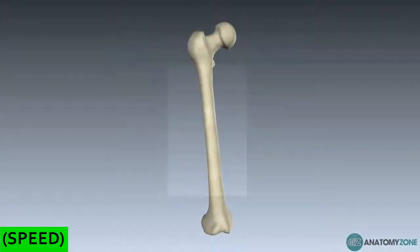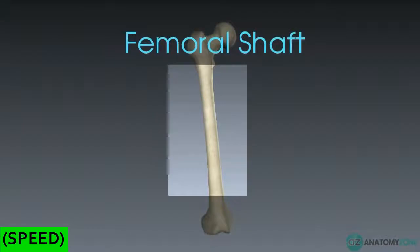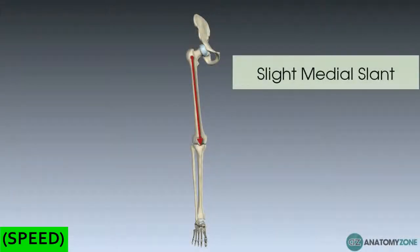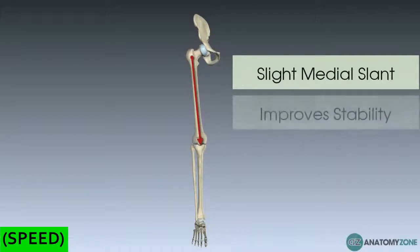Now let's look at the shaft of the femur. The first thing to notice is the slight medial direction of the femoral shaft. The femoral shaft moves towards the knee to help bring your lower limb closer to the center of your body, which helps to improve your stability.